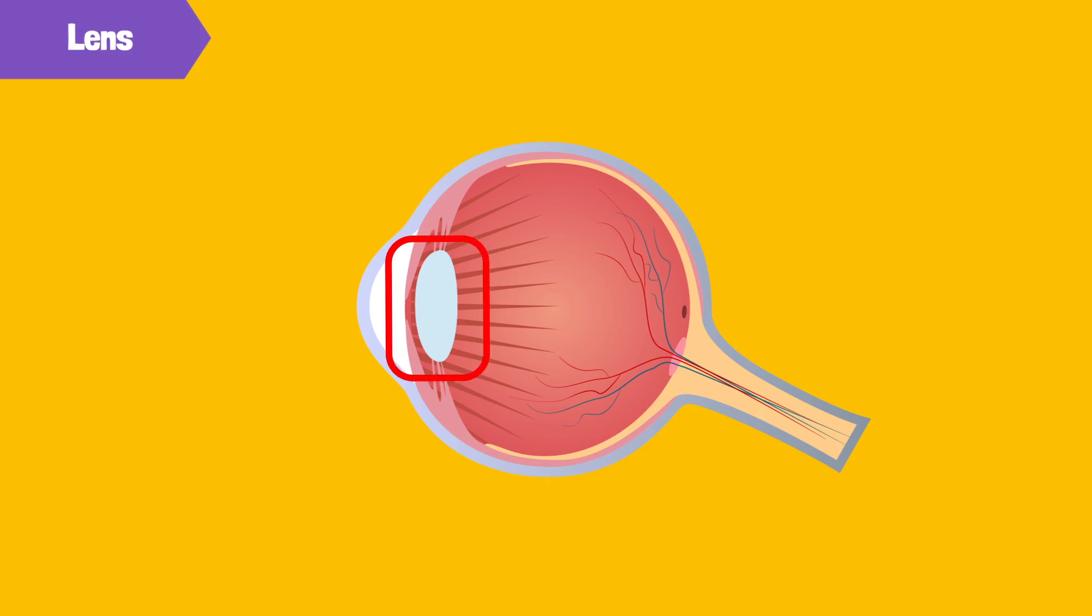The curvature of the lens in your eyes allows you to focus on objects at different distances and control some of the light that enters your eyes.